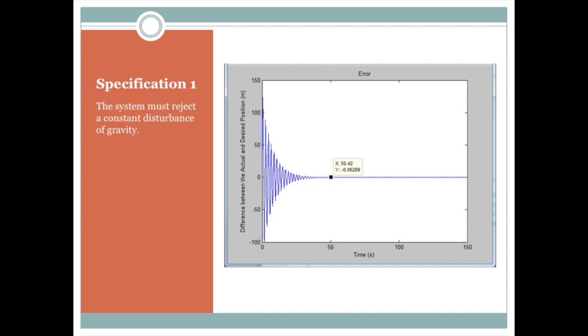This is our steady state error graph. As you can see, in the beginning it has a pretty large error of about 130 meters off, but it quickly settled down to just about zero after 50 seconds into the simulation. This also shows that it can reject the constant disturbance of gravity.